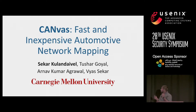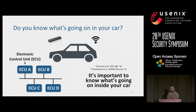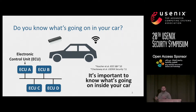Hi everyone. Today in this talk, I'll tell you about how we built an NMAP for cars. I'll start off with a question: do you know what's going on in your car? Well, a modern car consists of a network of electronic control units, or ECUs, that talk to each other to handle everything from your engine and brakes to your headlights.